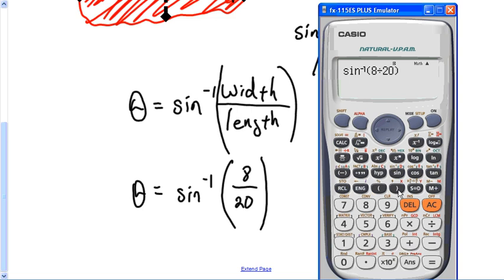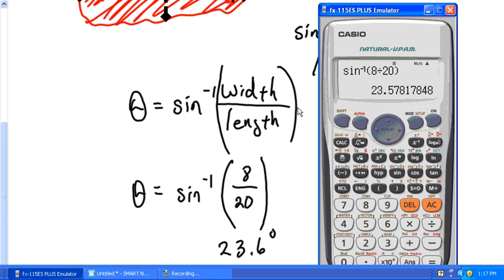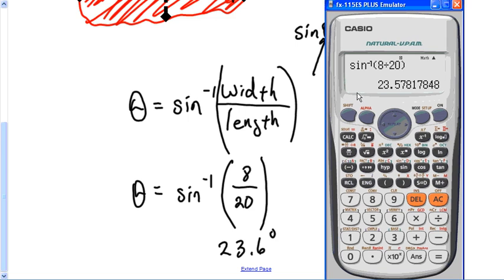Hit equals and lo and behold, the angle of my blood spatter is 23.6 degrees. So that is the angle of my splatter. That's how you put it in a calculator if you're having problems on that end of it.